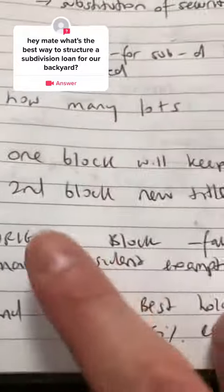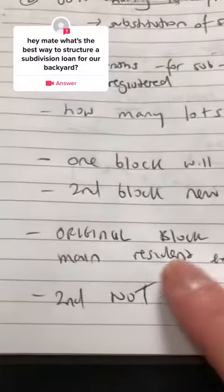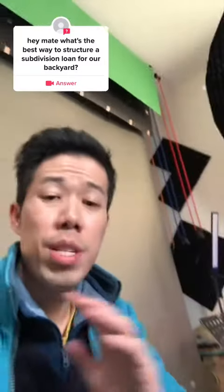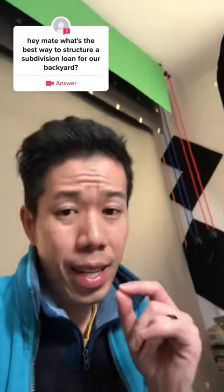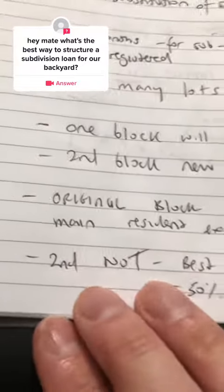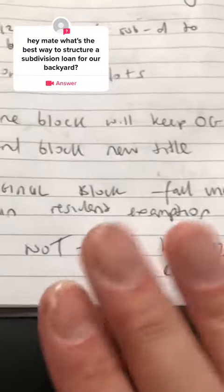This is a big tip. Original block will fall under the main residence exemption rule, which means if you sell it, you don't get any capital gains tax. However, the second lot, if you're doing two lots, that won't be exempted.